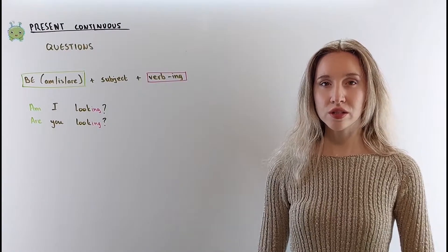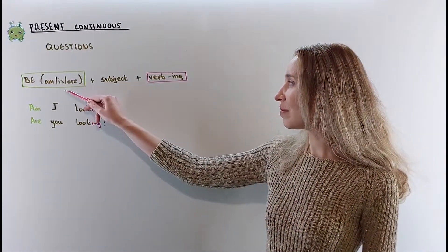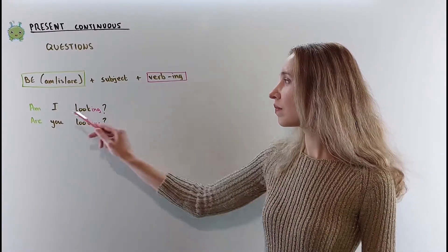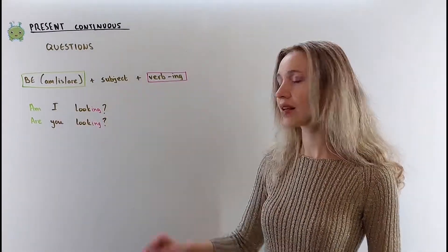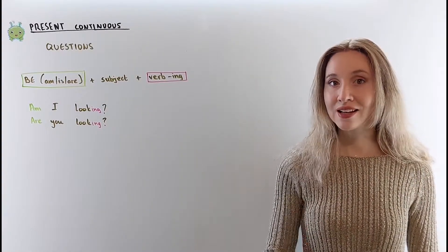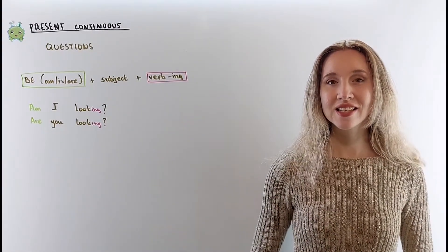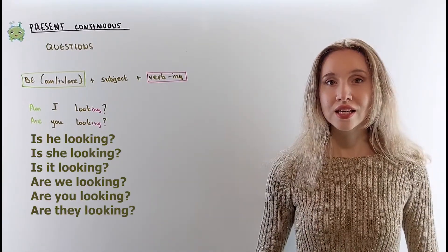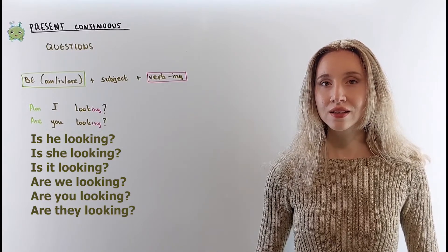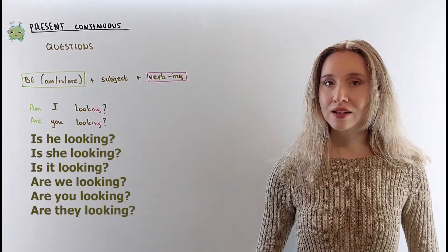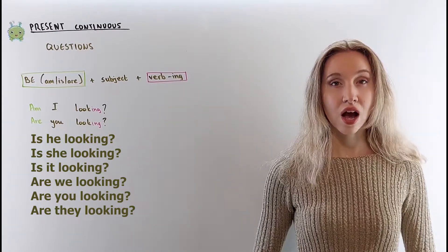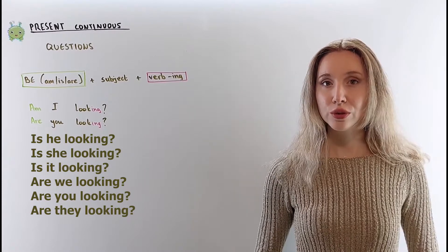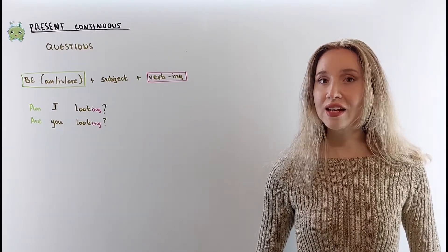If you want to ask a question, use the following order: am/is/are, subject, then the verb with ING. Am I looking? Are you looking? Is he looking? Is she looking? Is it looking? Are we looking? Are you looking? Are they looking?